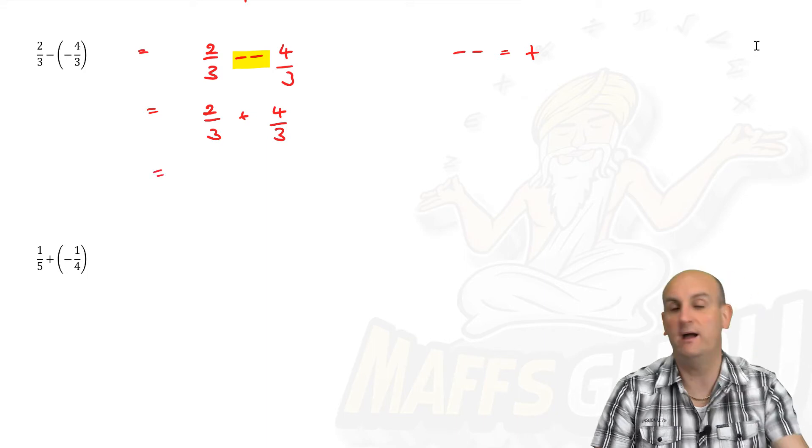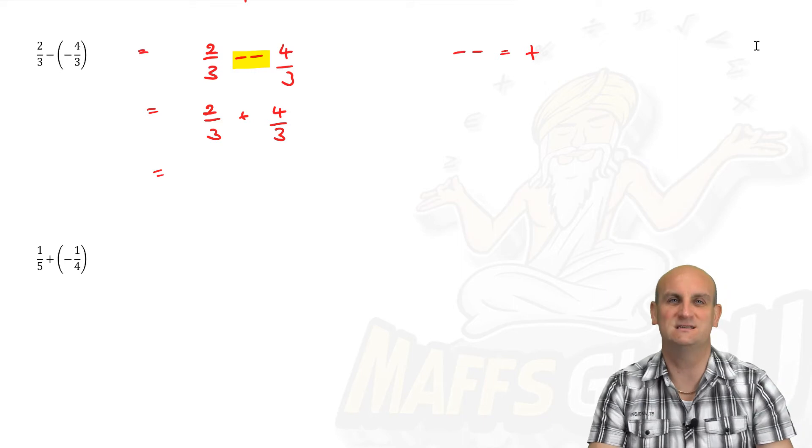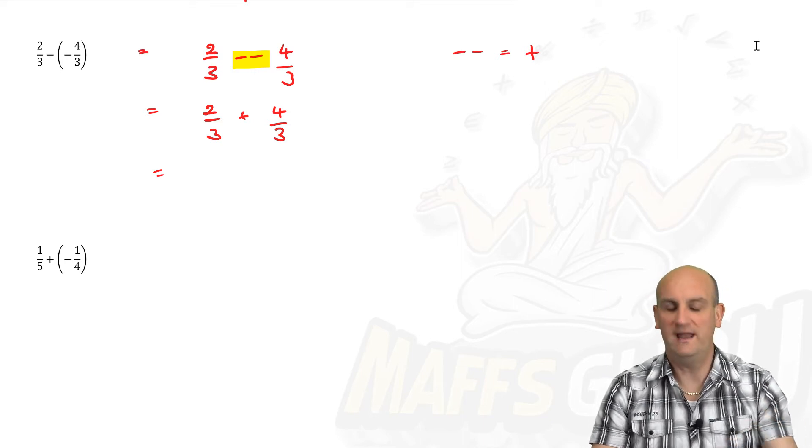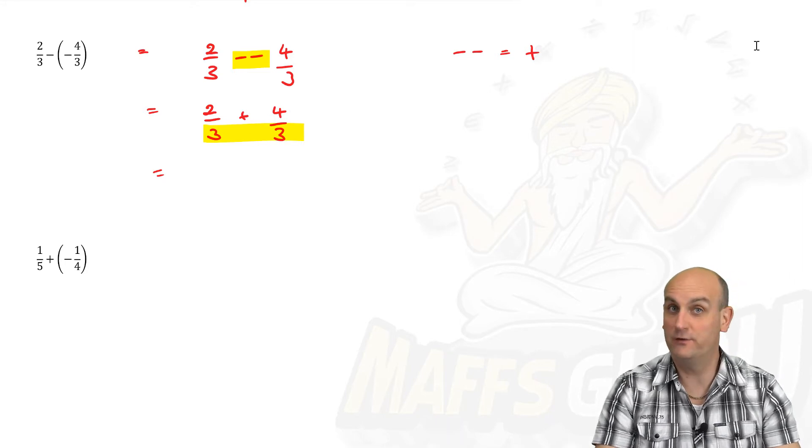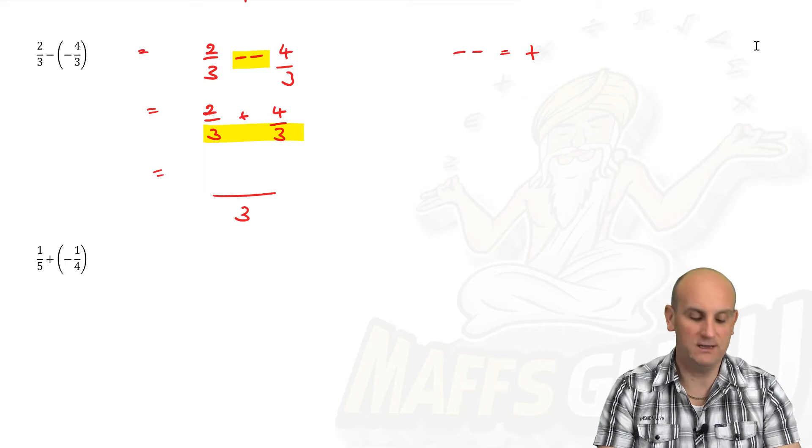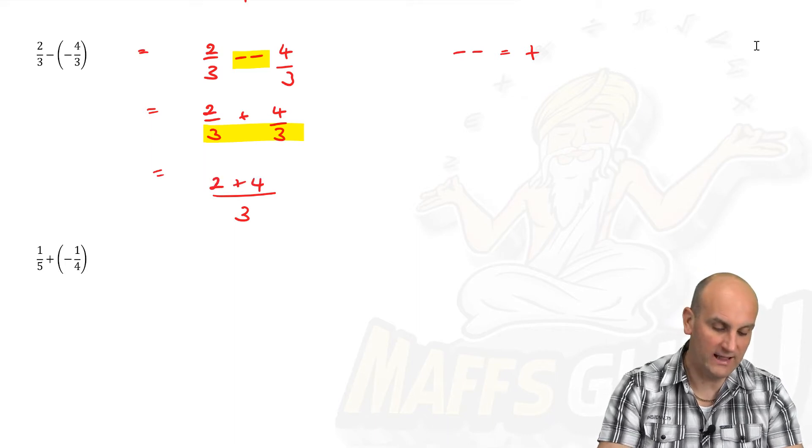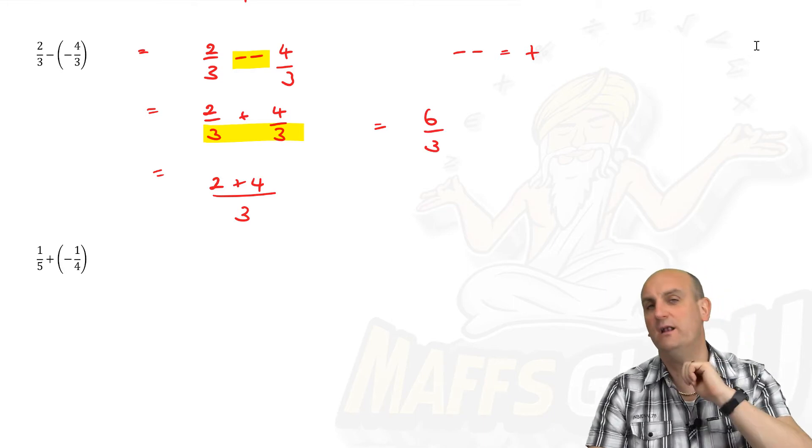And we are now adding fractions. So the negative number stuff, we're done with you. Thank you very much. Bye bye. Sayonara. We're adding two fractions together. So when I add fractions together, I have to check the denominator. Is the denominator the same? I should cocoa. So that stays as a three. The top numbers then just add, which gives me six on three. Is that my final answer?